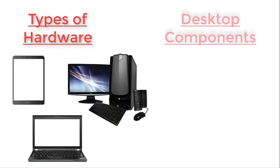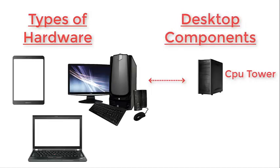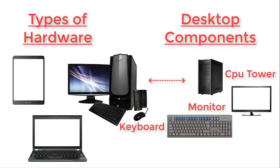Here are examples of the different types of computers and their hardware — tablet and laptop. These are the parts of a desktop PC or personal computer: CPU tower, monitor, keyboard, and mouse. A laptop and tablet are self-contained hardware with internal mouse and keyboard mechanisms, but the monitor, keyboard, and mouse are all hardware associated with a personal computer.